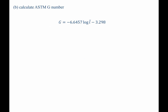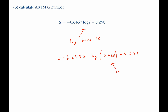Now we can move on to part B. Part B says calculate the ASTM G number. Simply, we plug it into the expression given in the chapter: G, the ASTM G number, equals negative 6.6457 times log base 10 of the mean intercept length, minus 3.298. We plug in negative 6.6457 times log of 0.088 minus 3.298. Note this needs to be in millimeters — we solved it previously in millimeters, so we're fine. Taking this together, we find that the ASTM G number for this material is 3.72.